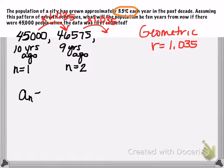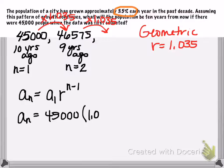So we know the general form for any geometric sequence can be found by multiplying the first term by r raised to the n minus 1 power. So for this sequence of numbers, my first term is 45,000. My r value, my common ratio, what I'm multiplying by is 1.035 raised to the n minus 1 power. So this would be our equation for this sequence of numbers.